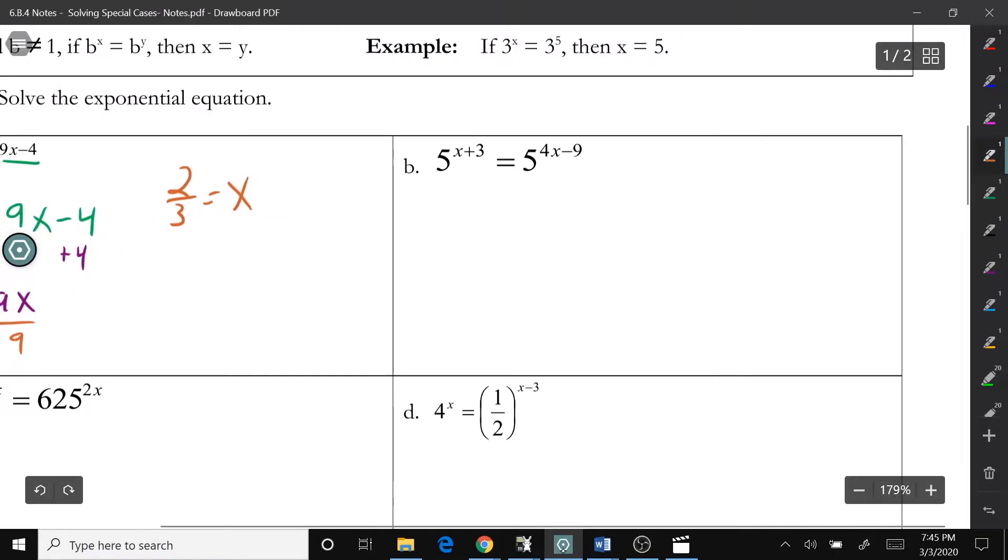Alright, so letter B, our bases are both 5, so that means we can do x plus 3 equals 4x minus 9, and then solve. So I'm going to subtract x from both sides. And I'm going to add 9 to both sides. So we get 12 equals 3x, and divide by 3, we get 4 is equal to x.